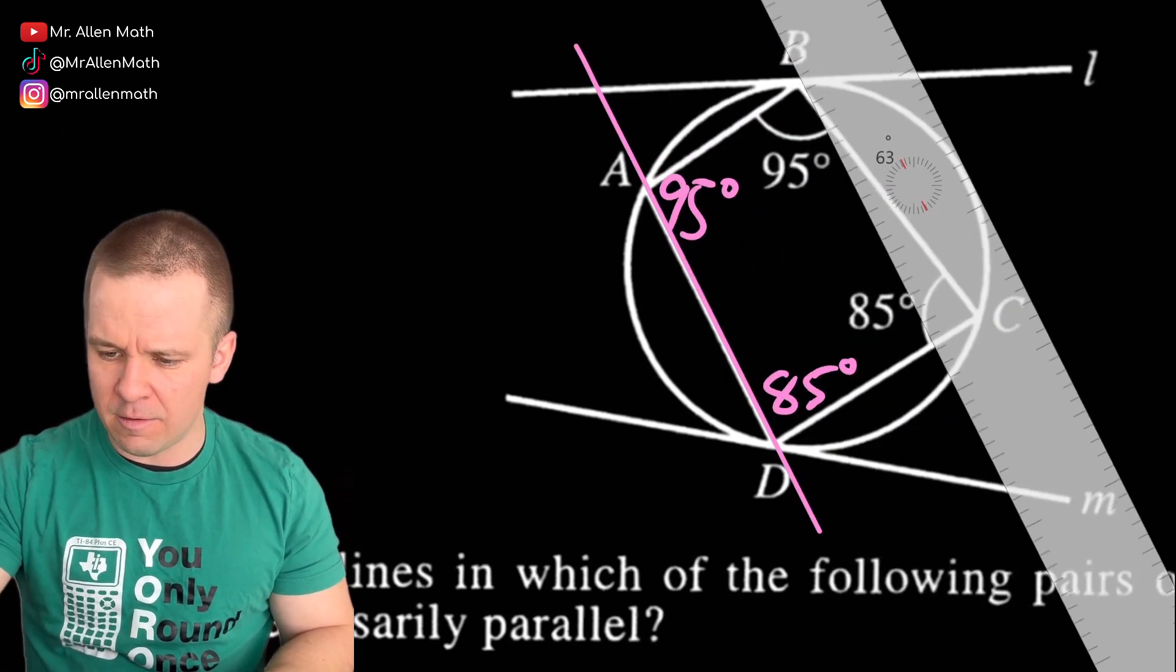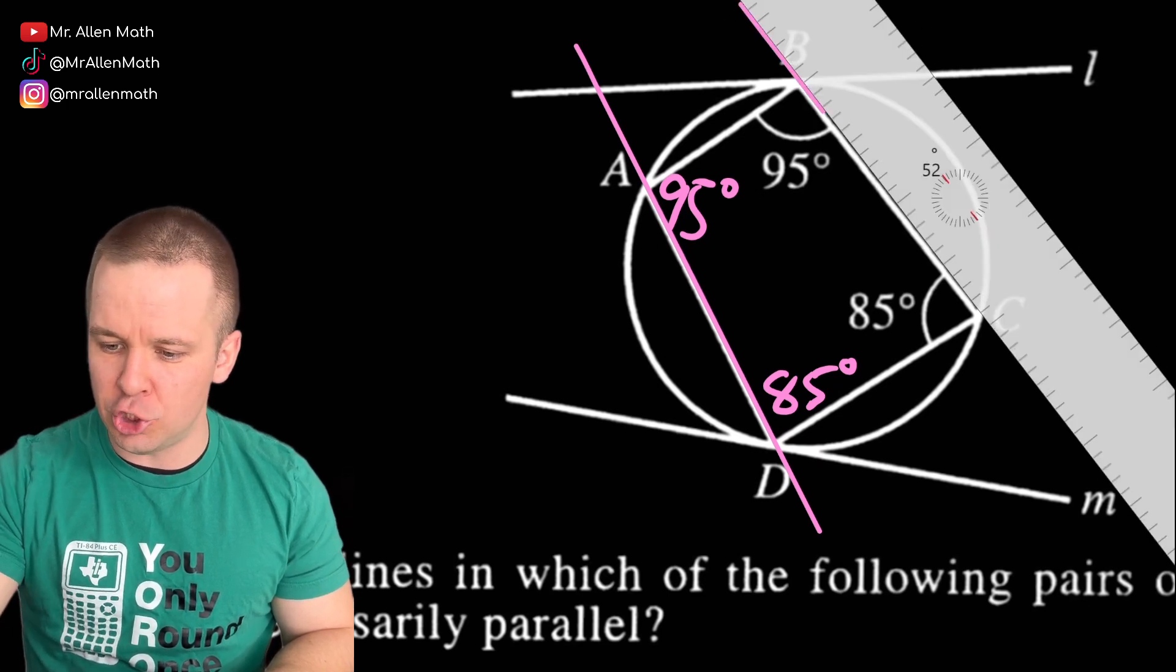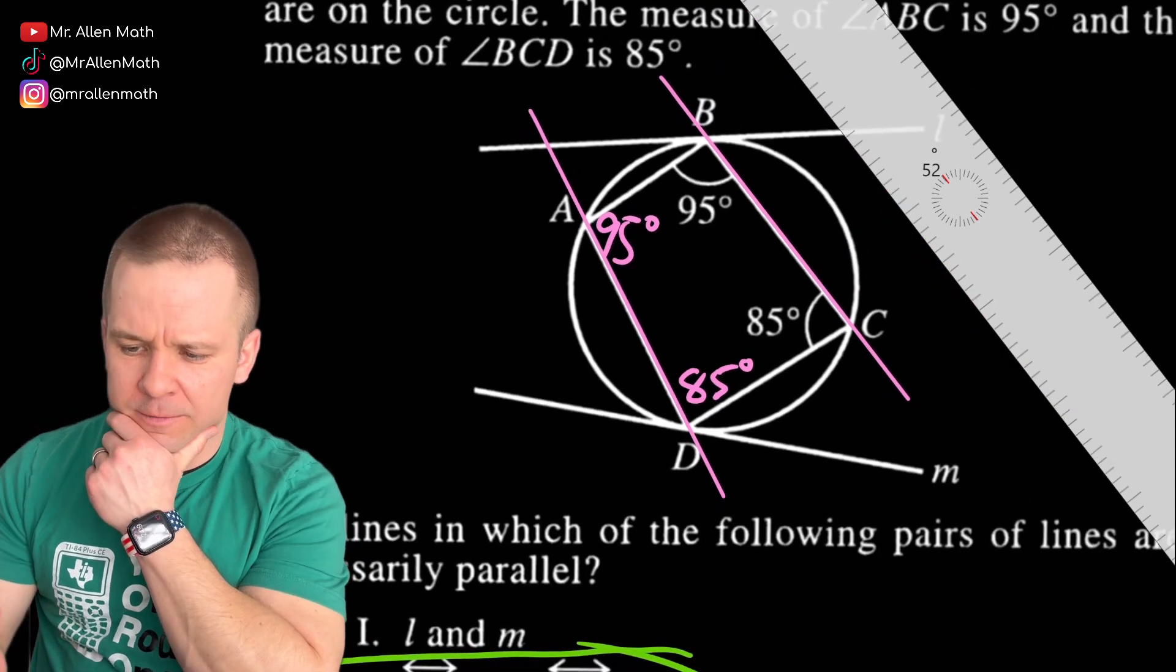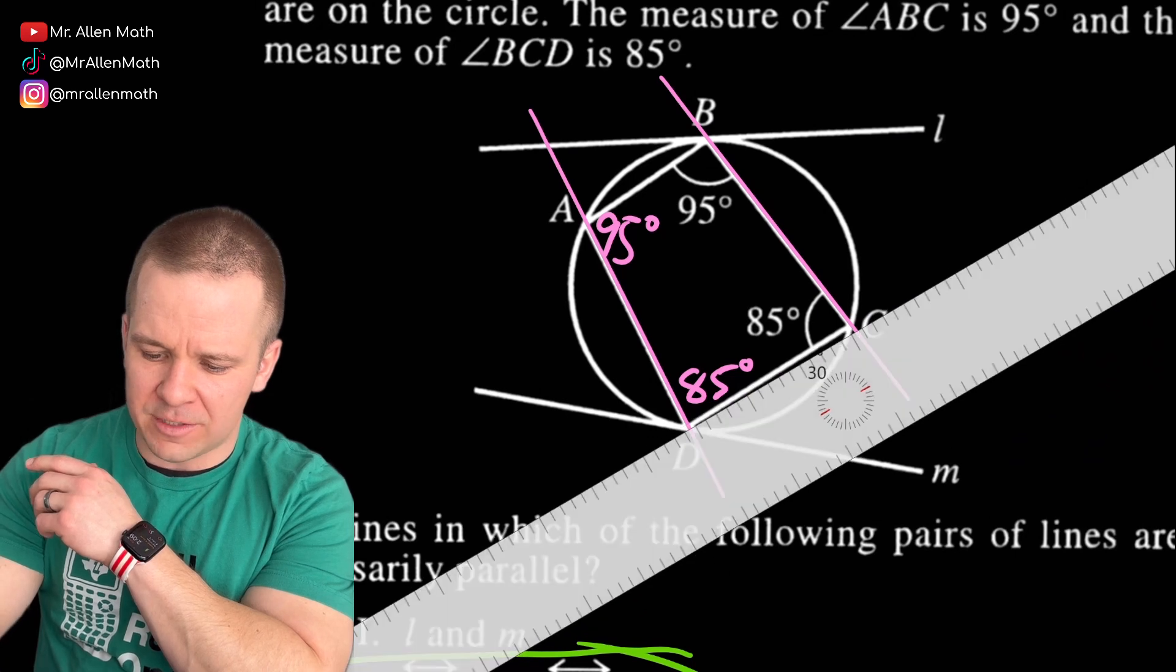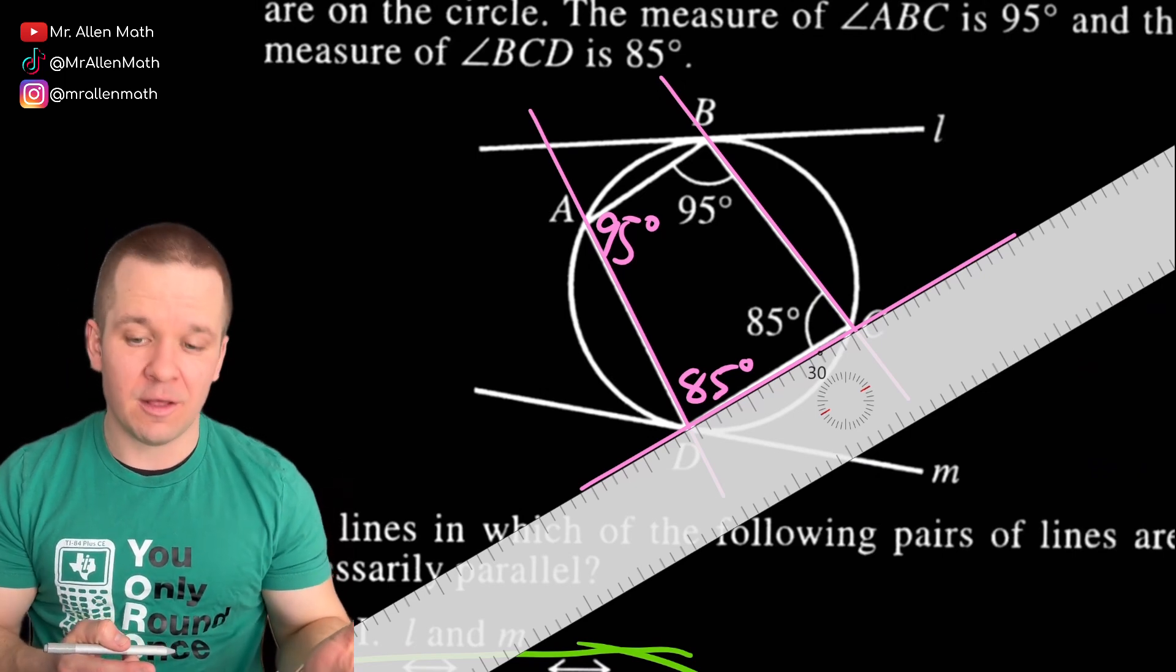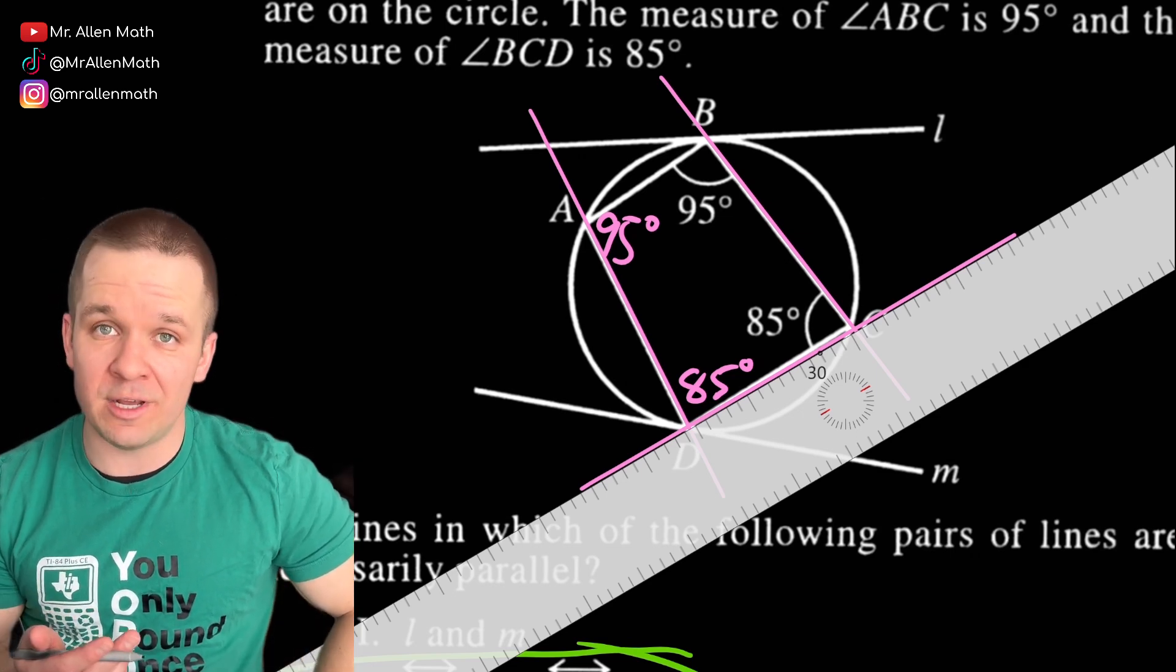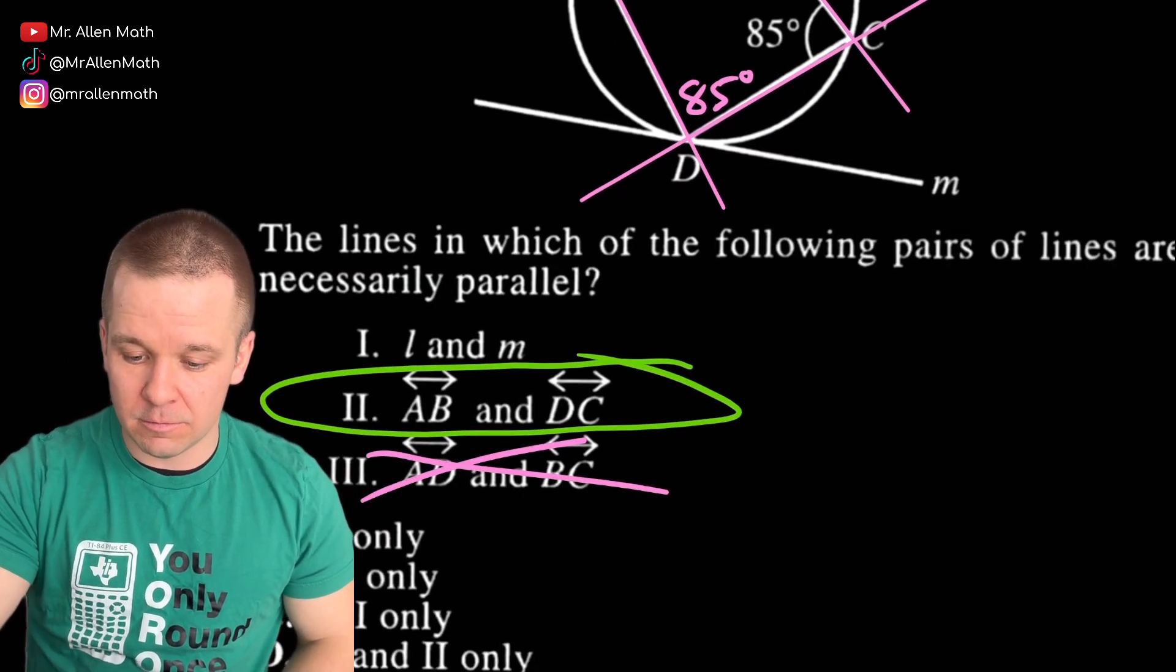What about the other ones? Well, remember the circle and the opposite angles being, or the circle, the quadrilateral and the opposite angles being supplementary to each other? Let's check that idea out. So back in here, across from 85 is angle A. That's going to be 95 degrees. 95 plus 85 is 180. And then across from the 95, the angle B one, that's angle D, that's 85 degrees. And the question now is AD.